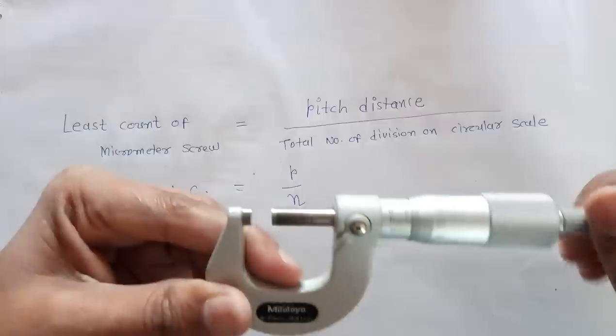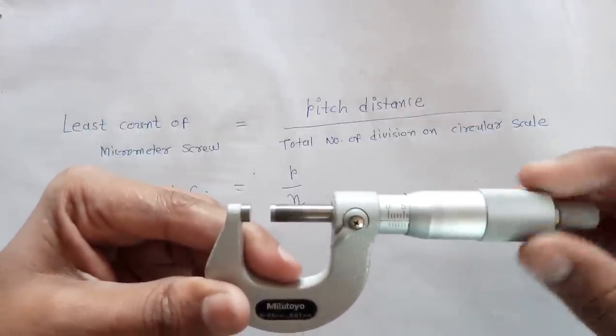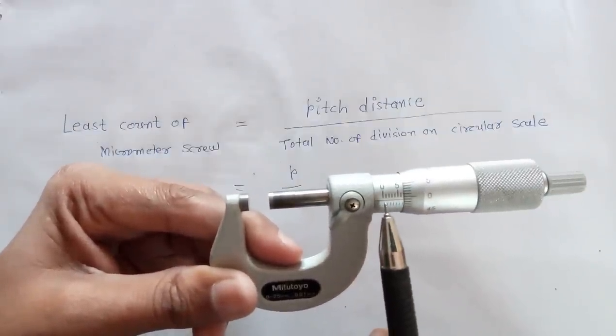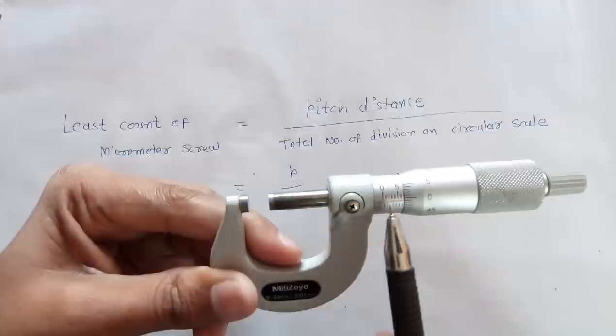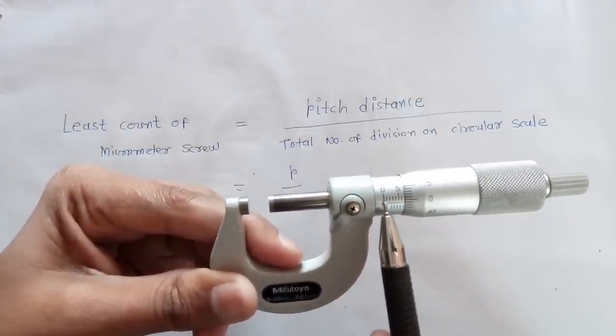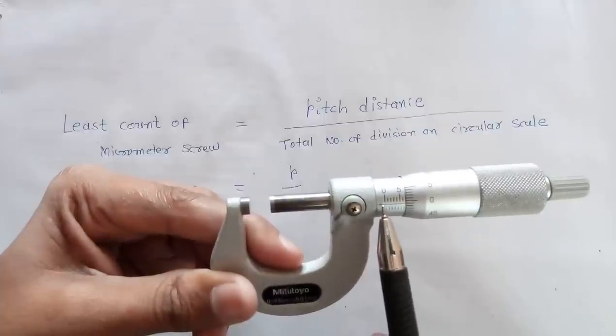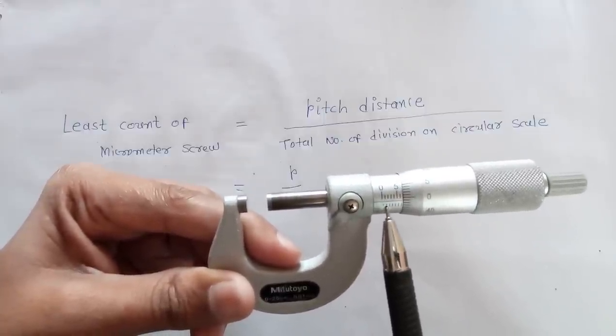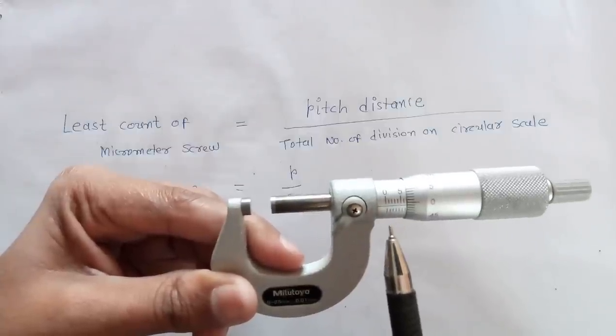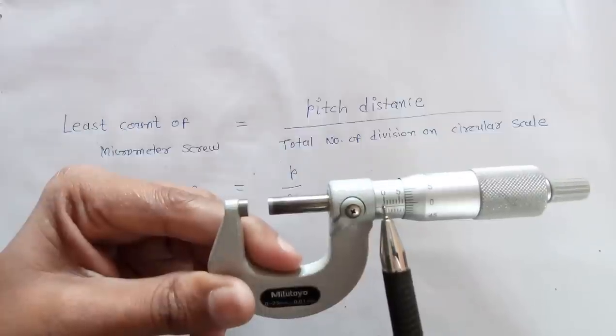You can measure it by doing it yourself. Here 0, 1mm, 2mm, 3mm, 4mm, 5mm. Distance between these two marks is 1mm. But there is one another mark: 0, 0.5, 1, 1.5, 2, 2.5. Means smallest division on main scale is 0.5.